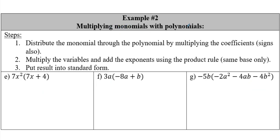Now for example number two, we are going to multiply a monomial times a polynomial. We have the same steps, with one extra: remember to put your answer in standard form. This is important because with a monomial times a polynomial we now have more than one term. We want to distribute - multiplying variables and adding exponents - just like our previous lesson on distribution. We can use this little rainbow technique.